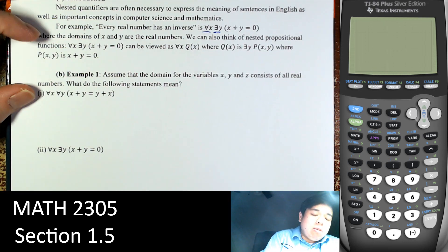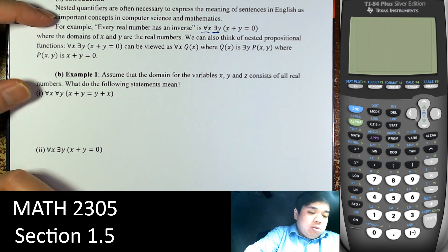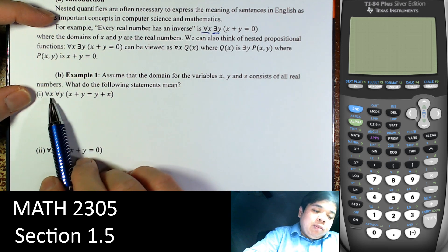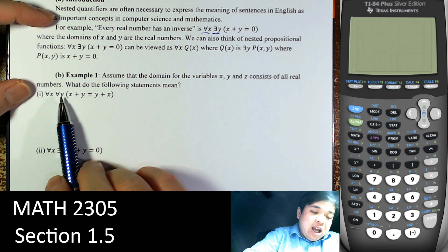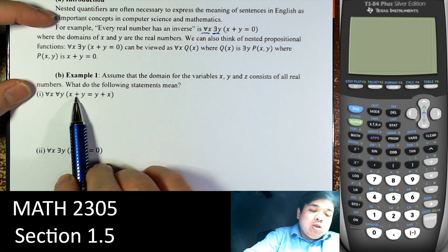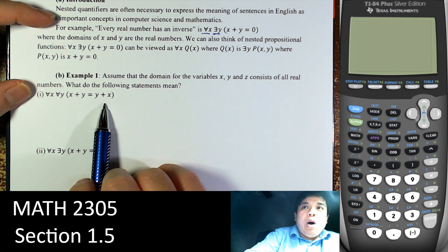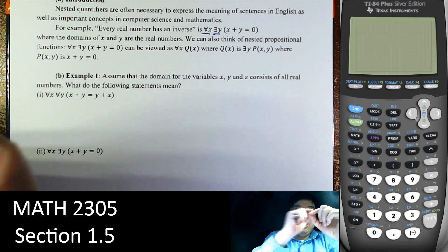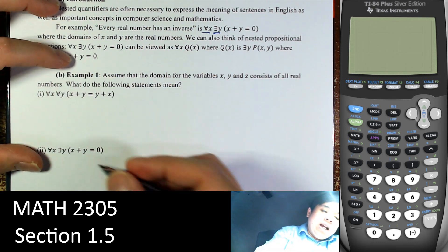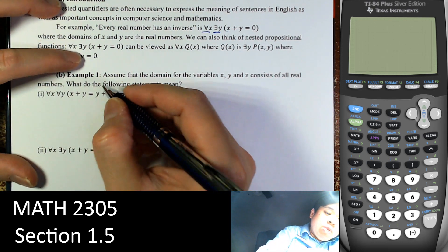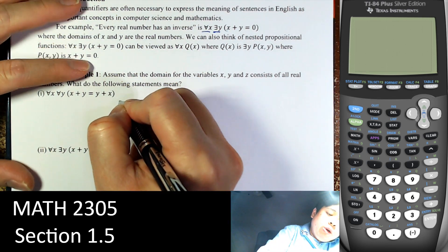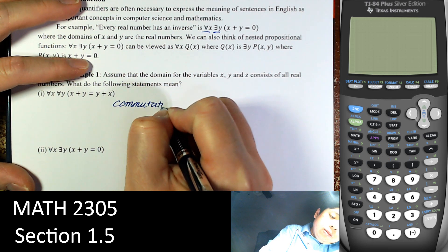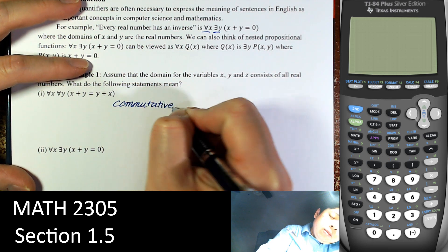Now look at some examples and see what these mean. For every x and for every y, x plus y is equal to y plus x. The meaning is that it doesn't matter what the two numbers are — we can interchange them. If we want to spell it out, this is the commutative property.